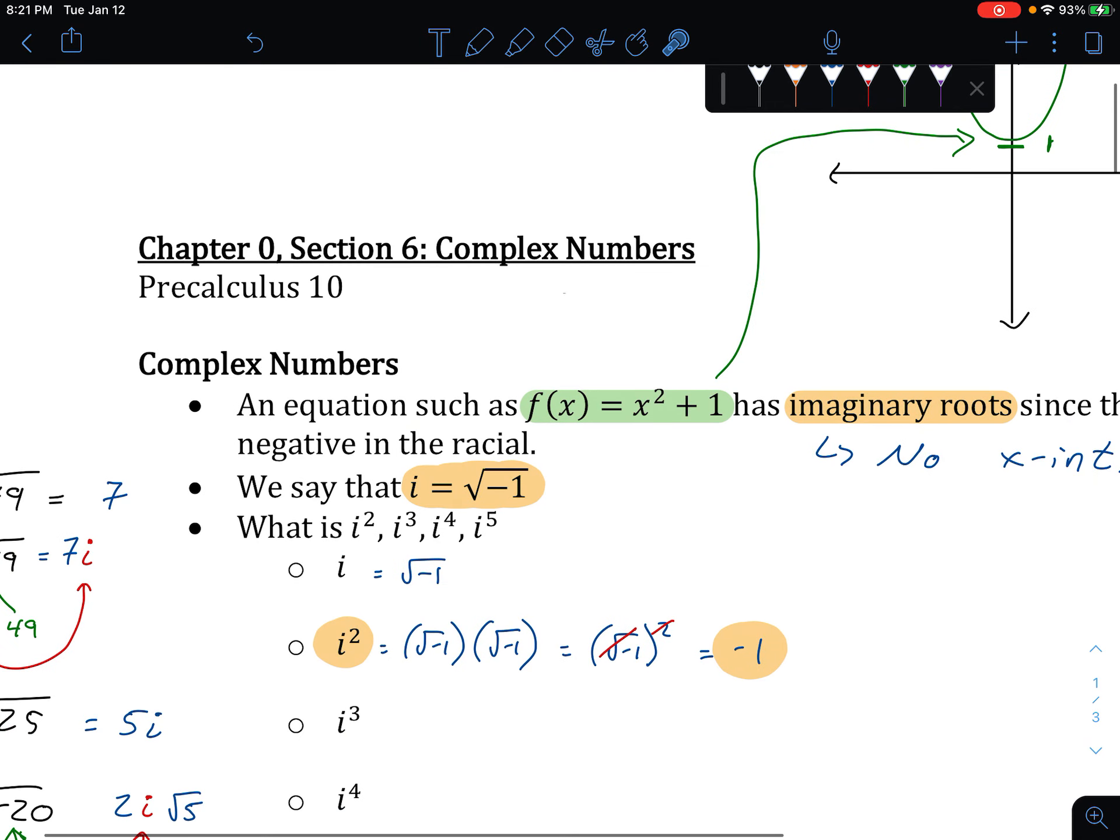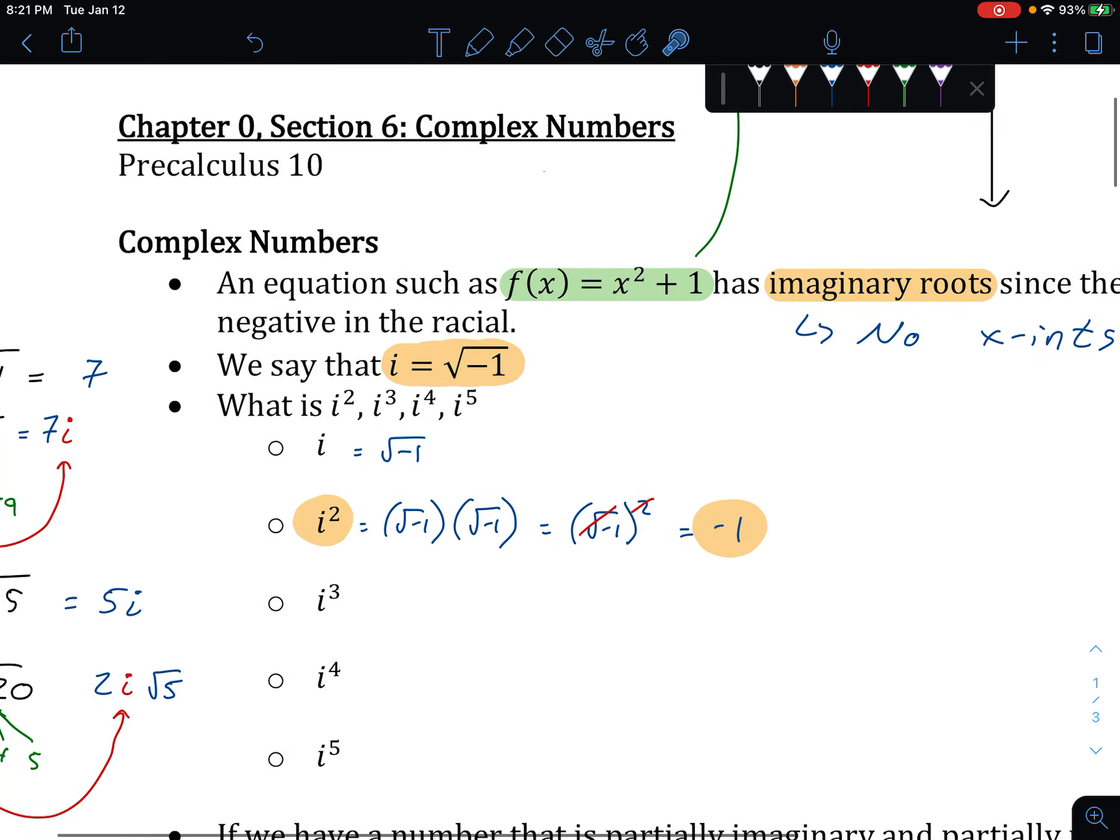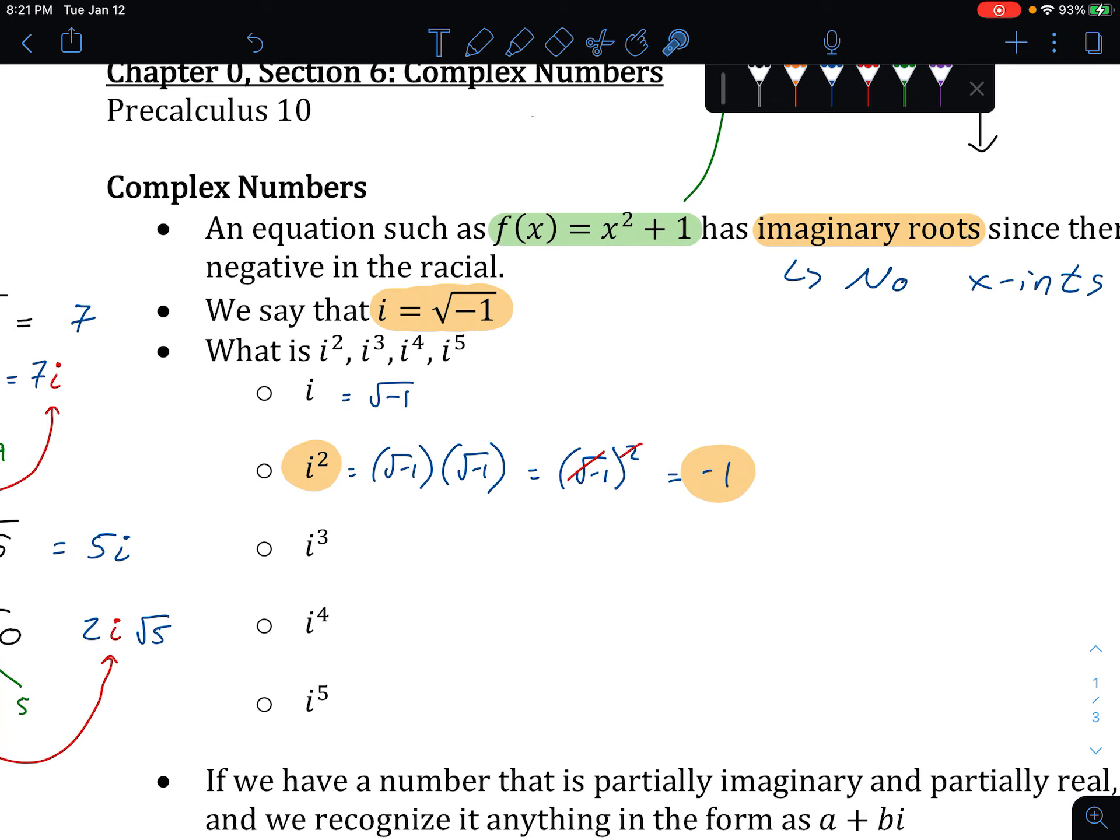And this is kind of why, going backwards, if I have something that's imaginary, and we square it, it comes out as a real number. Very, very, very useful, especially when we're dealing with quadratics, as we do most of the time.